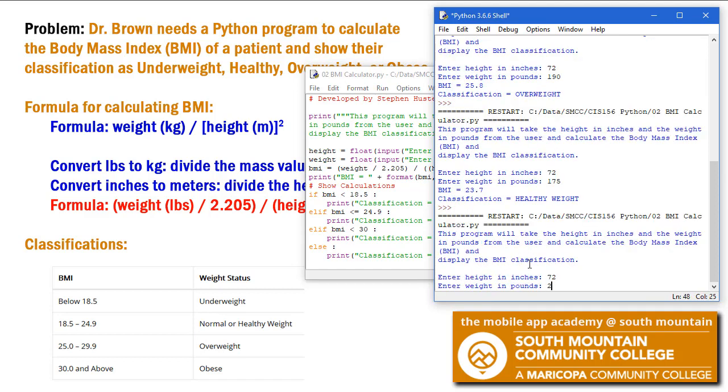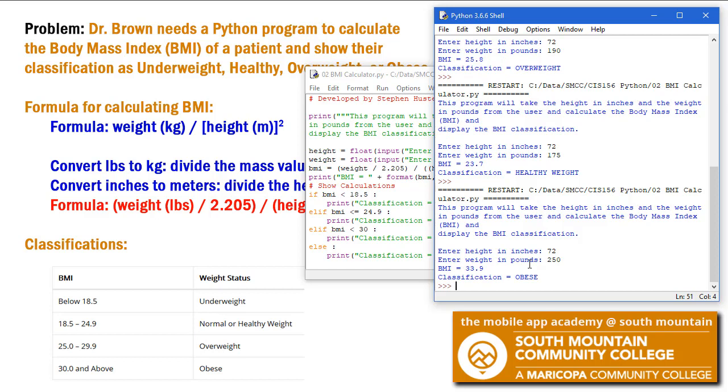And let's say they gained a lot of weight. Let's say they're now 250 pounds. That's 72 inches. Now their BMI is 33.9 and they're obese. So it seems to be working. Again, you'd want to test this a whole bunch more times.